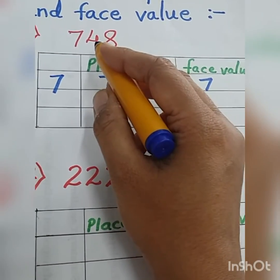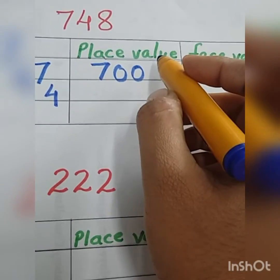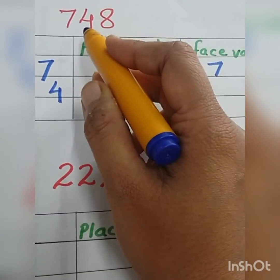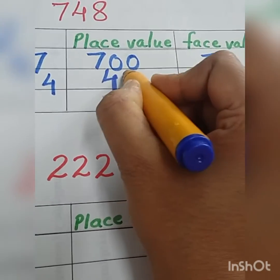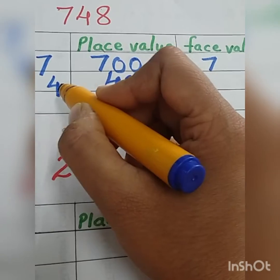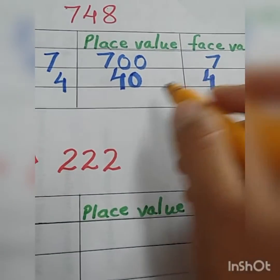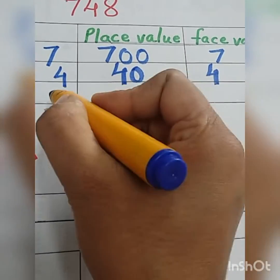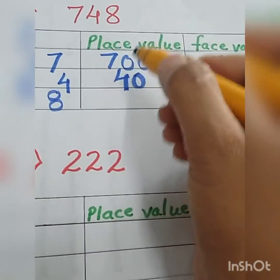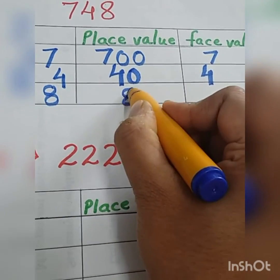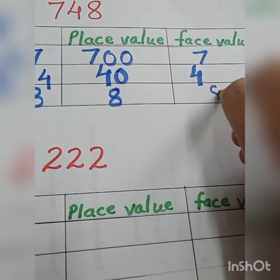Now coming to number 4. I want to write the place value of number 4. 4 is at tens place, so the place value will be 40. And what about the face value? Again the number itself, so 4 as it is will be the face value. After that, number 8 — 8 is at ones place, so the place value is 8 and the face value is again the number itself, so the face value of 8 is 8.